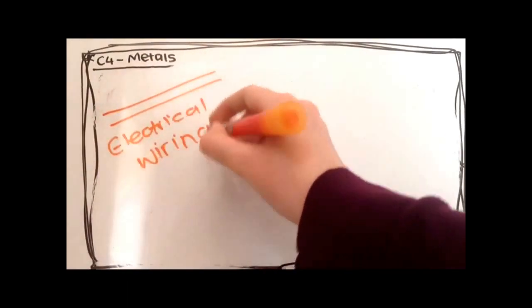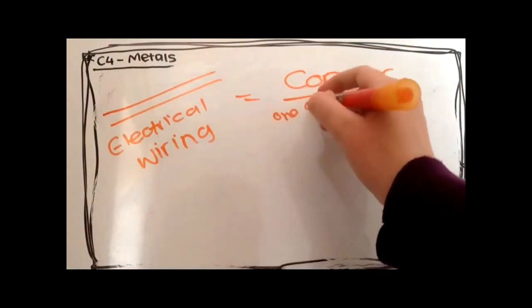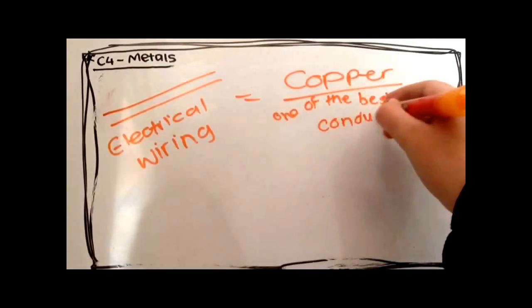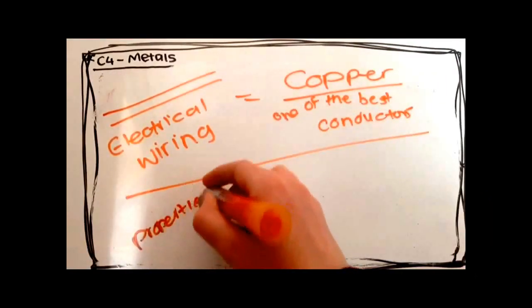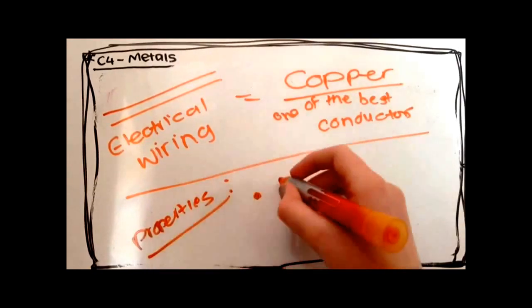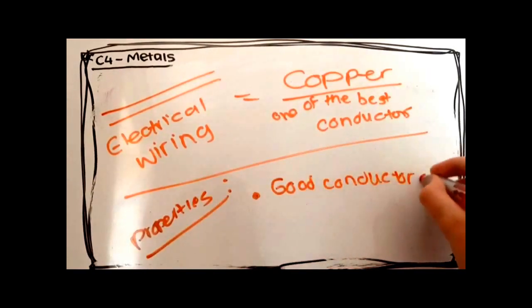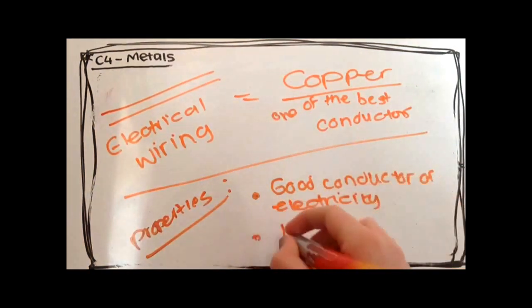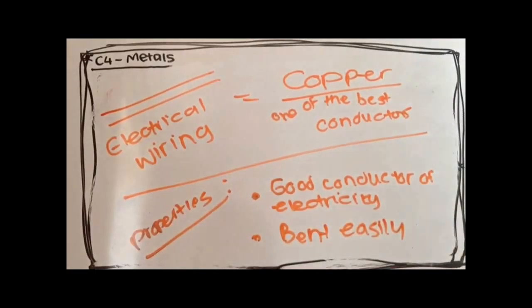Electrical wiring is made of copper, and copper is one of the best conductors all round. Obviously it's copper because it has the properties of a good conductor of electricity and is easily bent.